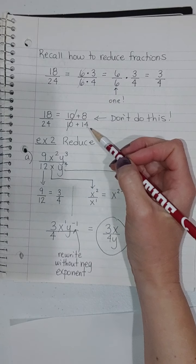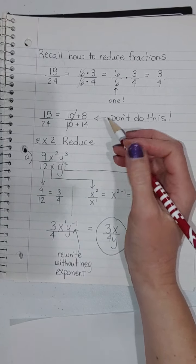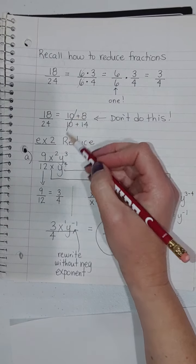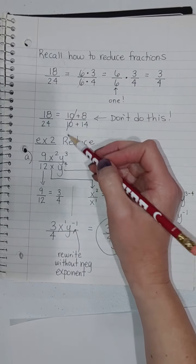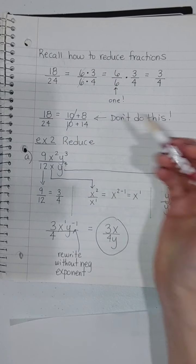So you've got to be really careful. You can only cancel when there's multiplication — you cannot cancel with addition. It's going to be so tempting, but we're going to have to resist this urge.